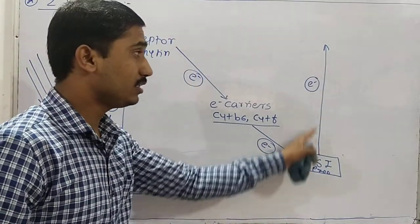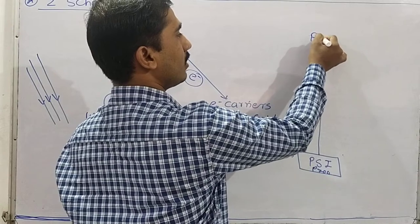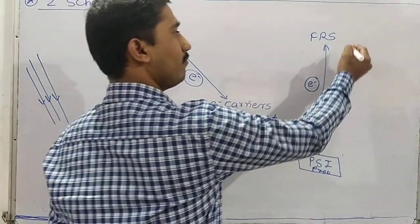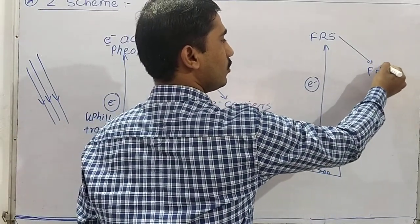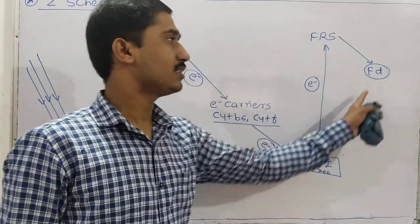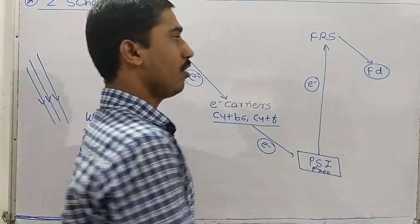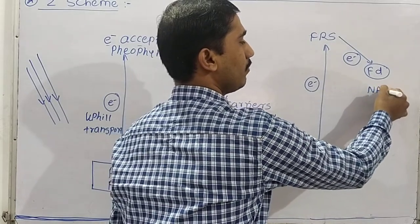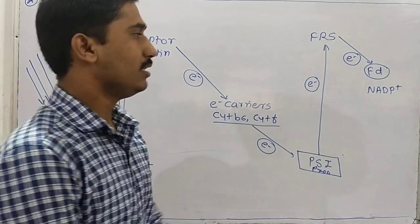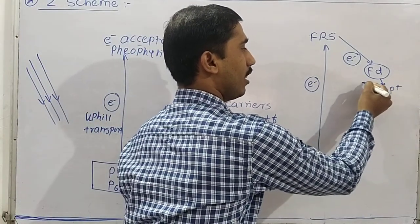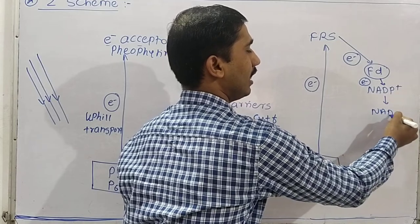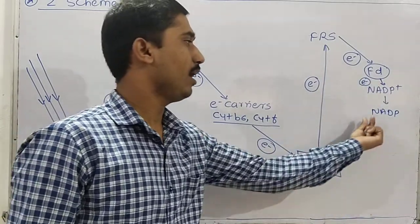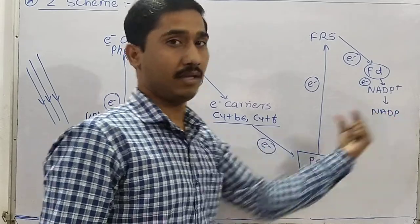The electron repelled from PS I is accepted by the electron acceptor FRS — the Ferredoxin Reducing Substance. From FRS, the electron is transported to the electron carrier ferredoxin. From ferredoxin, the electron is transported to NADP+. NADP+ receives the electron and transitions to the NADP stage — that is, NADP+ traps the electron and becomes NADP.